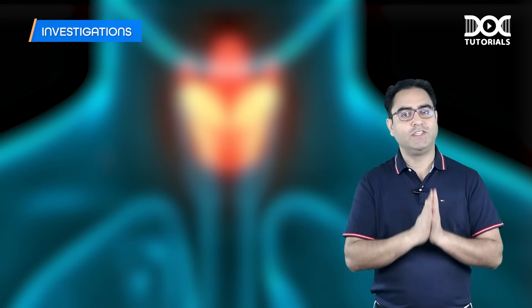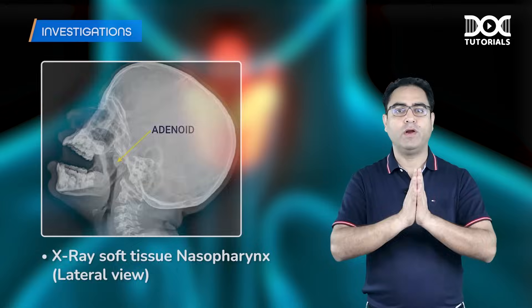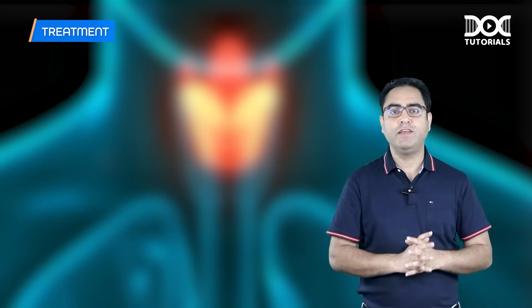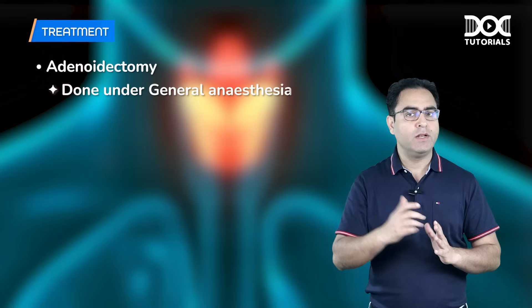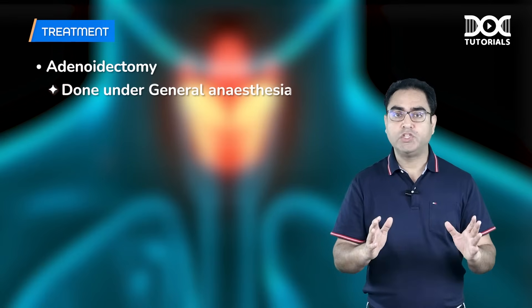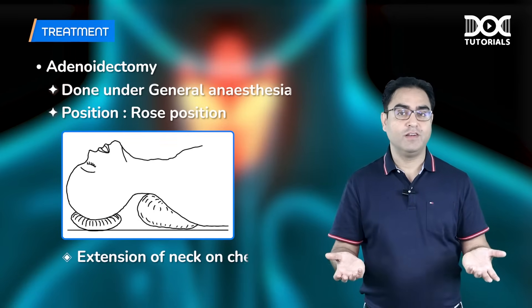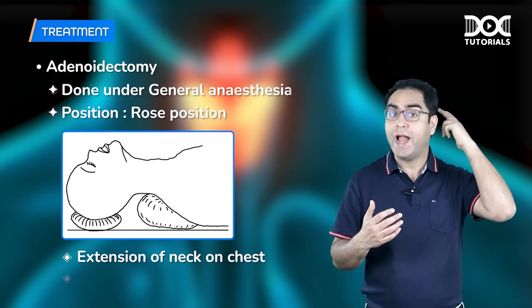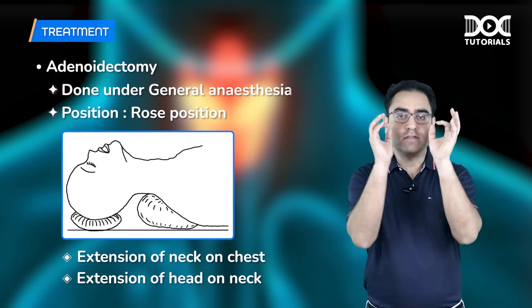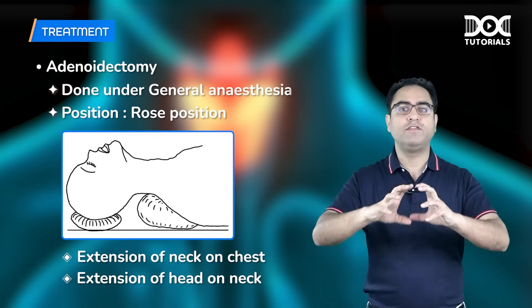For investigation, we do an X-ray soft tissue nasopharynx lateral view to see the size of the adenoid. The treatment of choice is surgery — adenoidectomy — done under general anaesthesia. After GA, the patient is placed in the rose position: extension of the neck on the chest and extension of the head on the neck — full extension. The same position is used for tonsillectomy. Please avoid overextension of the neck.